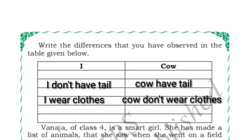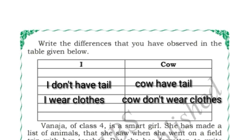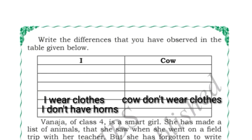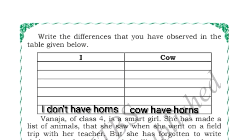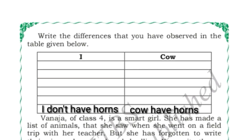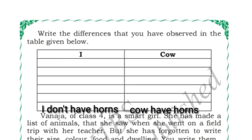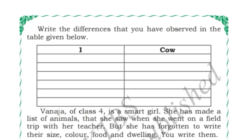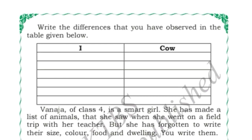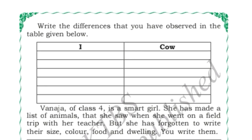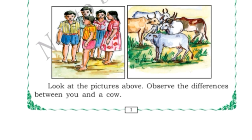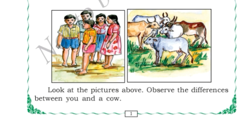I wear clothes, cow does not wear clothes. Cow gives milk, I do not give milk. So these are the differences between I and cow.